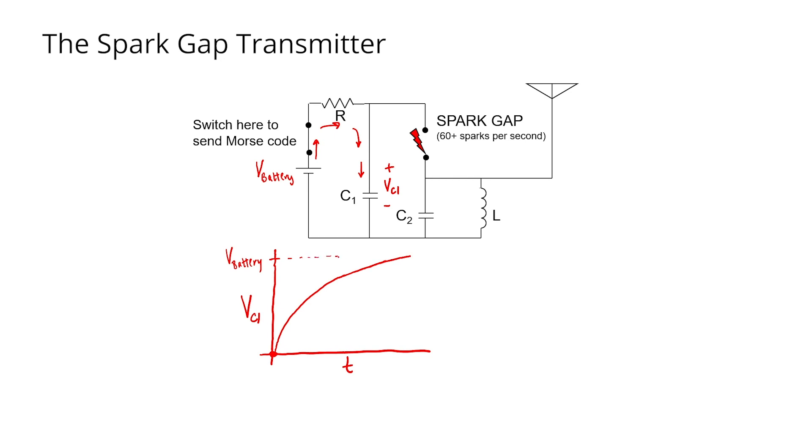Now what will actually happen in the circuit is that eventually, VC1 will start to get very high. And once we exceed the breakdown voltage of air across the spark gap, then the air will break down, and we'll start to have current flow from capacitor C1 down into capacitor C2, where the initial voltage is just zero.